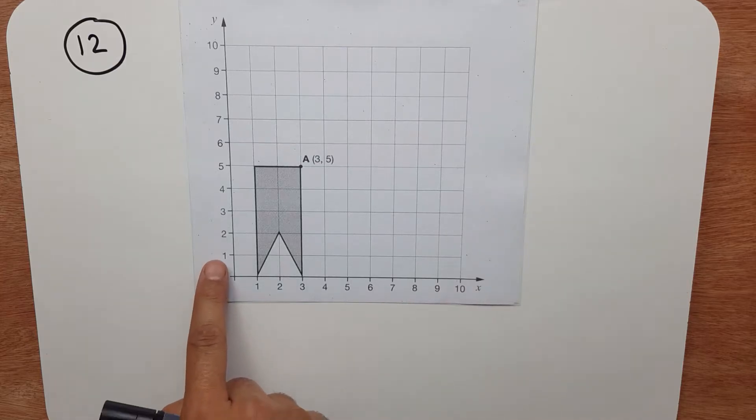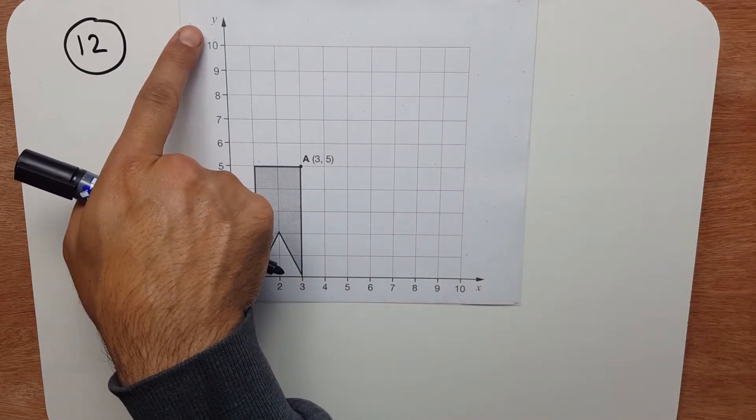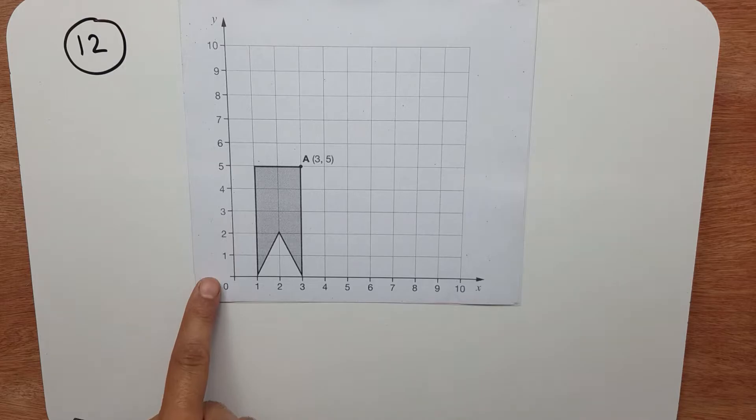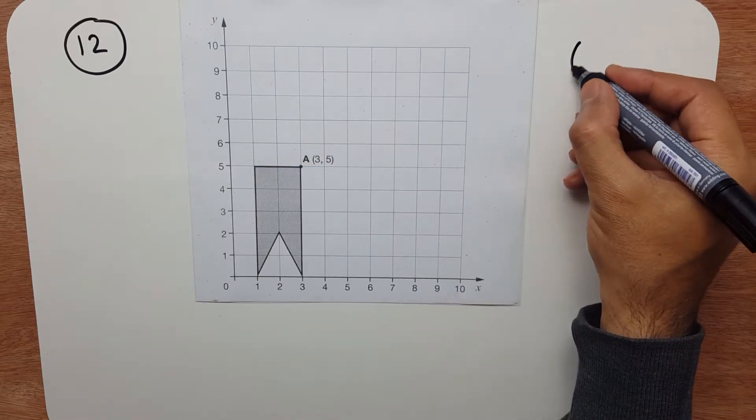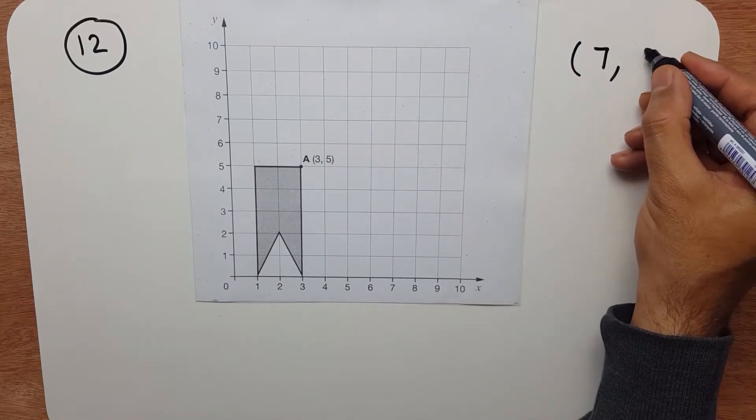and when you go up, you go along the y-axis, which is up the stairs. And we're asked to translate this shape, so point A moves to 7, 8.